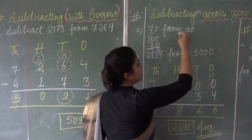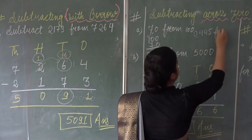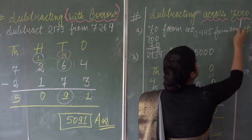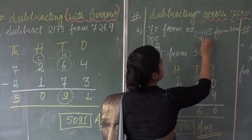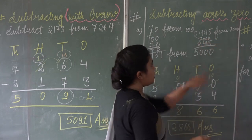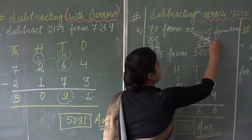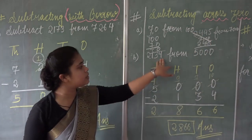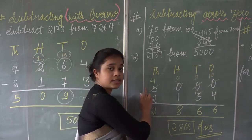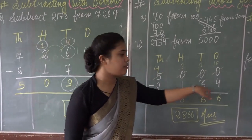Let us take another number. If you are asked to subtract 2334 from 5000, you arrange it in columns with 5000 on top as the greater number, and 2134 below it.